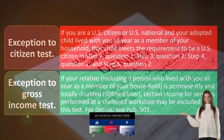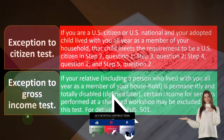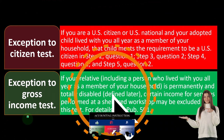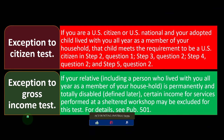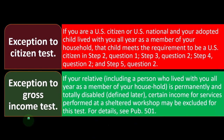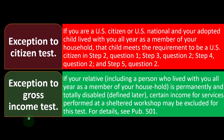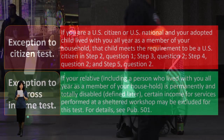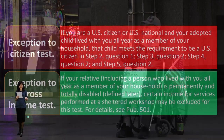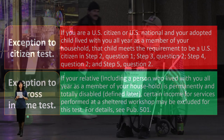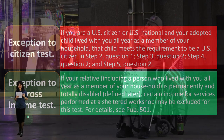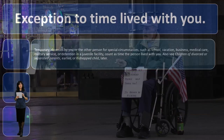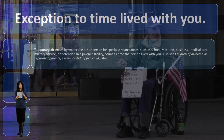Exception to the gross income test: if your relative — including a person who lived with you all year as a member of your household — is permanently and totally disabled, certain income for services performed at a sheltered workshop may be excluded for this test. For more details, see Publication 501. Remember, if they're not a qualifying child, that income test is quite low to be able to claim them as a dependent — one of the barriers.